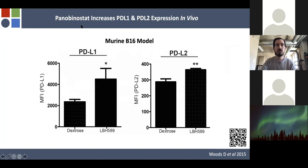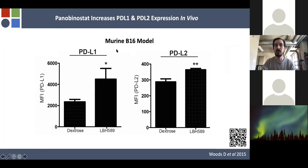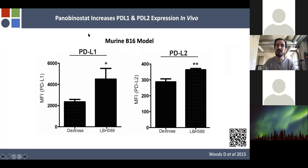This also happens in vivo. We went to a murine B16 model, treated mice with panobinostat, resected B16 tumors, and measured PD-L1 and PD-L2 by flow. Indeed, when treated in vivo, we get the same upregulation of PD-L1 and PD-L2.